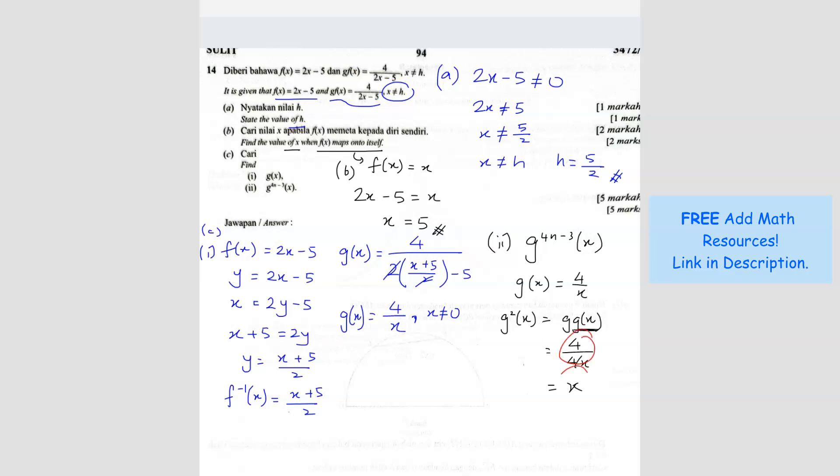So yeah, what you get is x. So wait, for those who don't know how I got from this to this, 4 divided by 4 over x is the same as 4 divided by, I mean, I can write like this. So change it to times, I get 4 times x over 4. So I can cut. So answer is x. Okay, so that's why I got x here. So x, g squared will give you x.